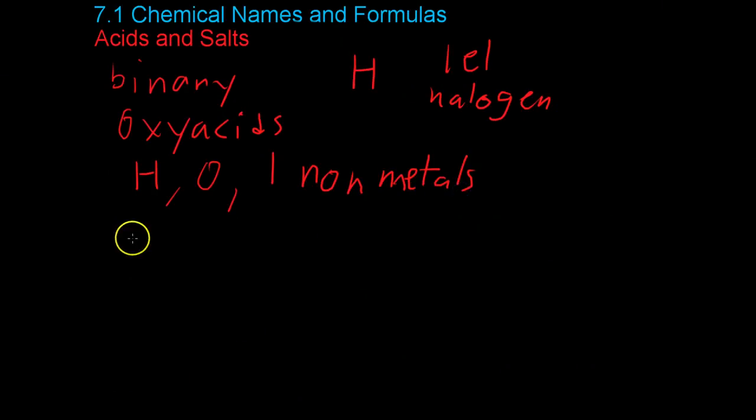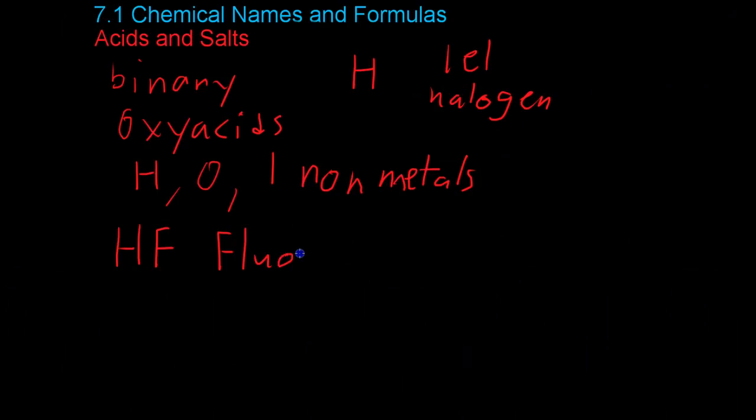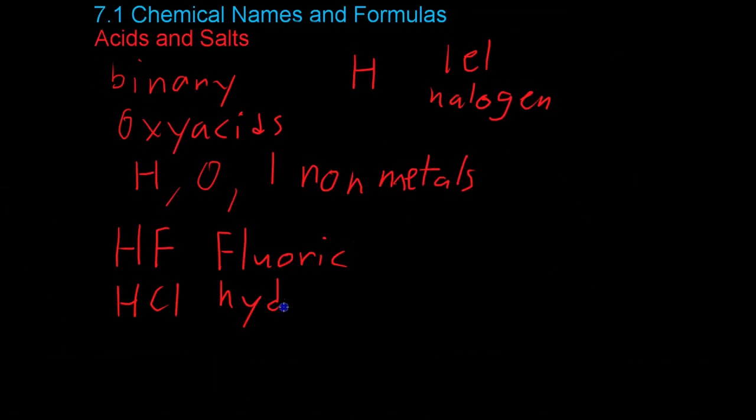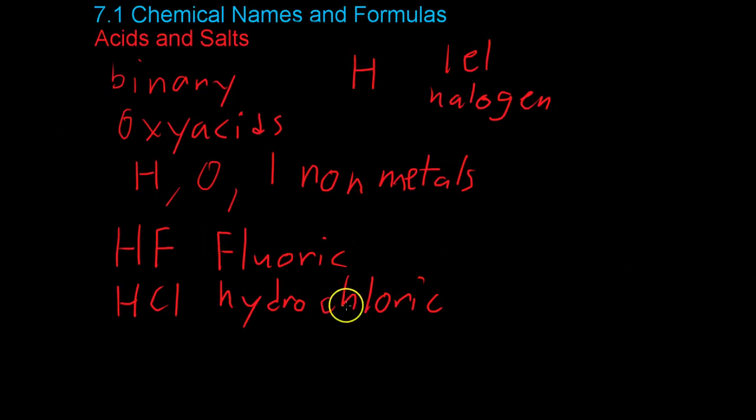Now, you name binary acids based on the element that they're attached to. For example, HF, which contains fluorine, is known as hydrofluoric acid. HCl is known as hydrochloric acid, etc., and it goes through the same pattern with the -ic suffix as you go down the halogens.